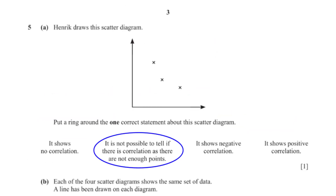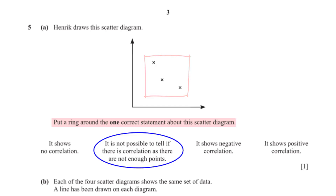Henrik draws this scatter diagram. Put a ring around one correct statement about this scatter diagram. It can be tempting to say this is a negative correlation; however, there are not many points to be able to come to this conclusion, because for all we know the points may show no correlation, and so that will be our final answer.